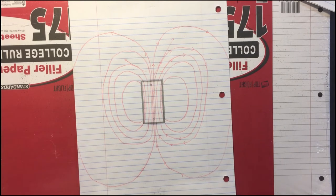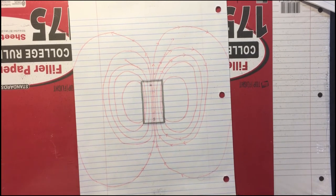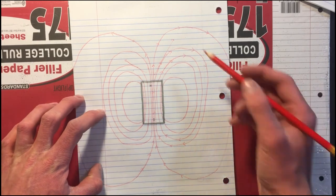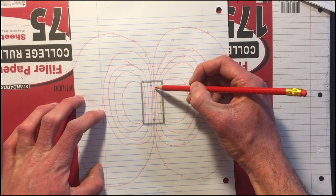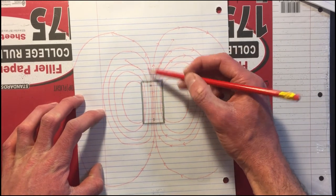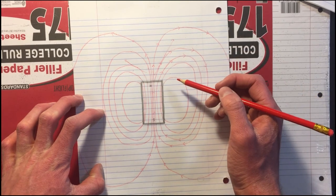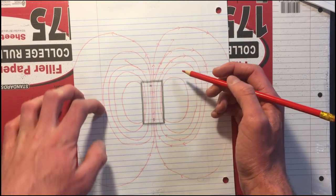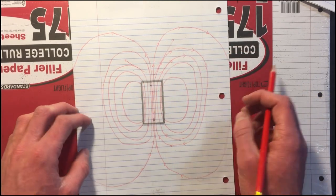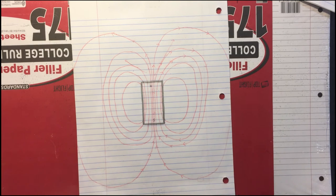The strength of the magnetic field is represented by the closeness or proximity of the lines. If I draw more lines closer together, that means it's a stronger magnetic field. If there are fewer lines, that means the magnetic field is not as strong.